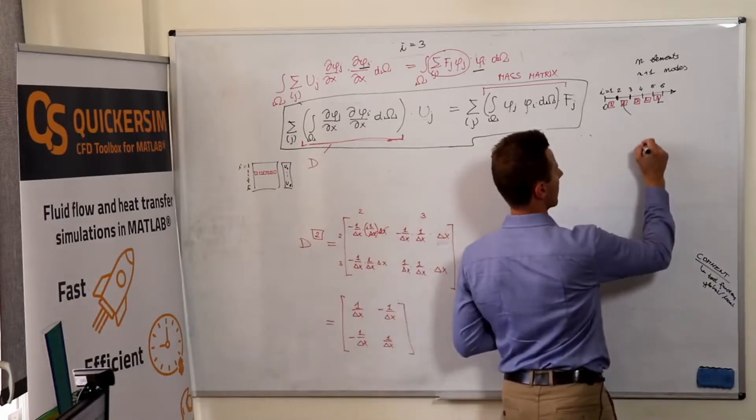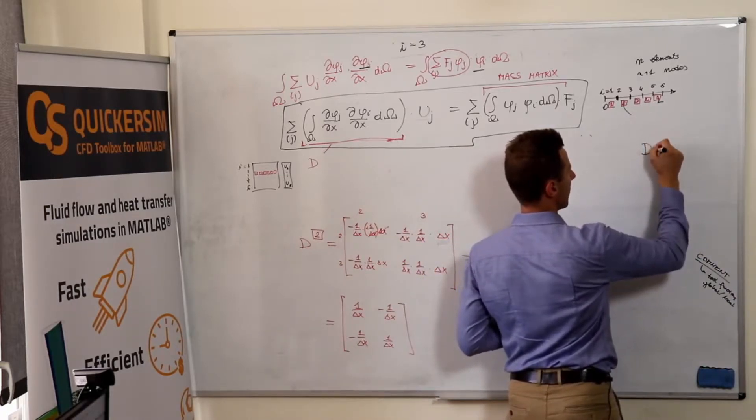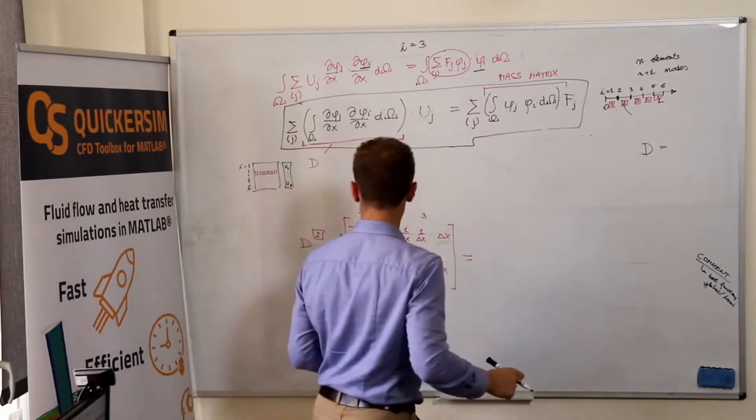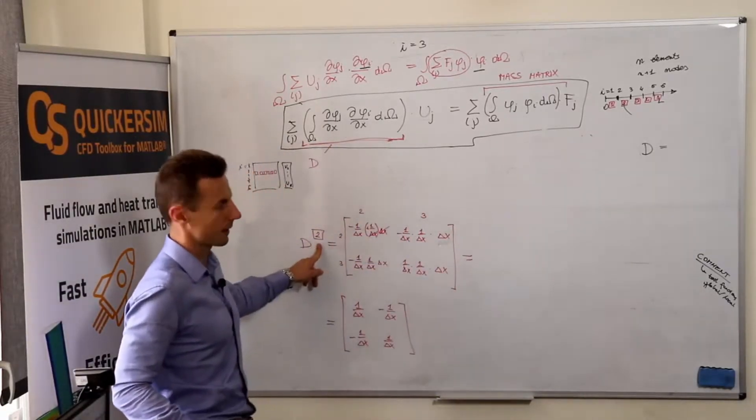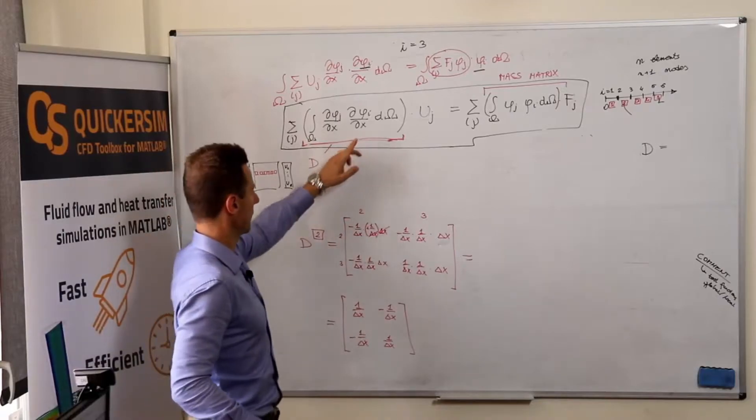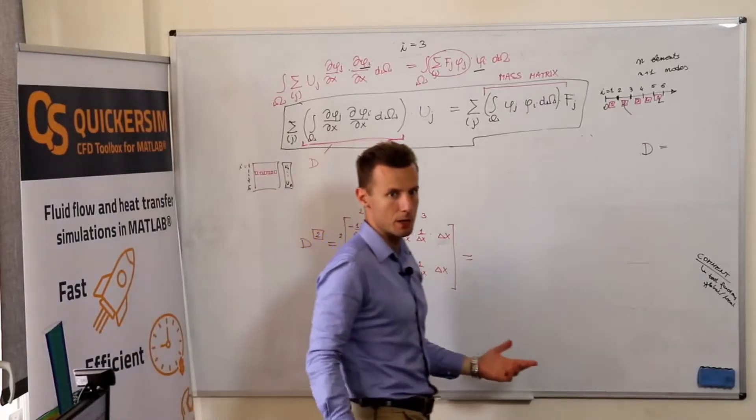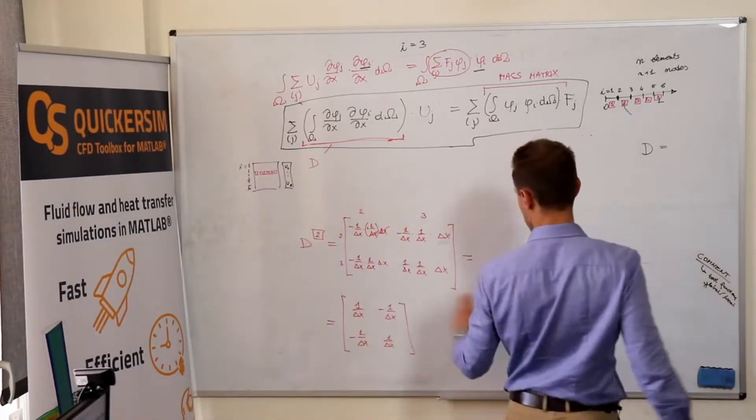Let me rewrite this local diffusion matrix. It's not only for this second element. If we follow the same procedure in other elements, we will end up still with the same result because we've got exactly the same shape functions and test functions.